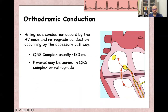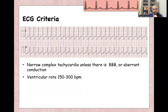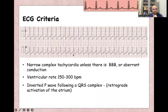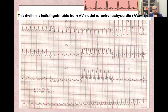The P-wave is usually buried in the QRS itself or may appear retrograde after the QRS. ECG criteria for orthodromic AV re-entry tachycardia include narrow complex tachycardia unless there is bundle branch block or aberrant conduction with fast rate. Ventricular rate is usually between 150 and 300 beats per minute, and inverted P-waves may follow the QRS or be buried into it. Sometimes there is rate-related ST depression. As seen here, this is a narrow complex tachycardia with no visible P-wave — it's buried in the QRS — and the rate is around 200 beats per minute.